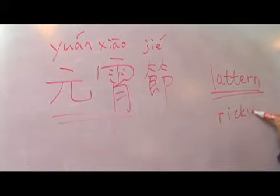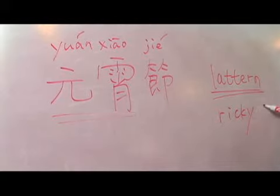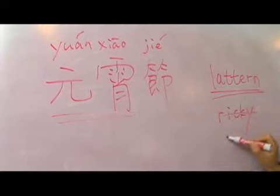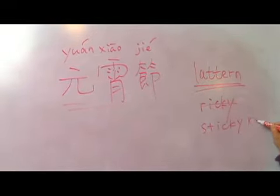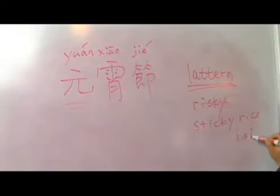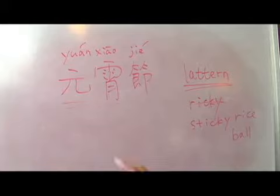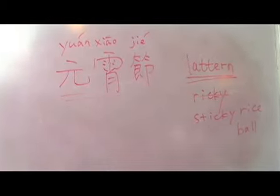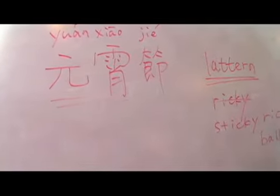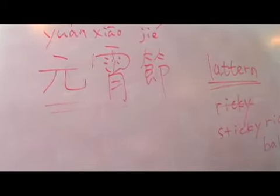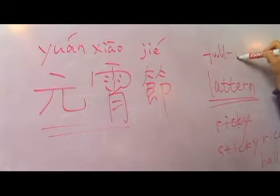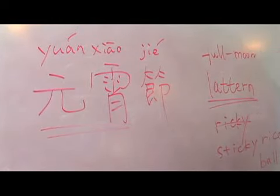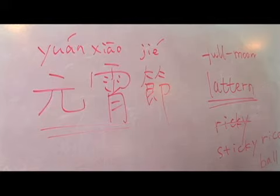Also on that day, people eat a kind of sticky rice ball called 元宵. So the key words of 元宵节 are: full moon, lantern, and sticky rice ball.